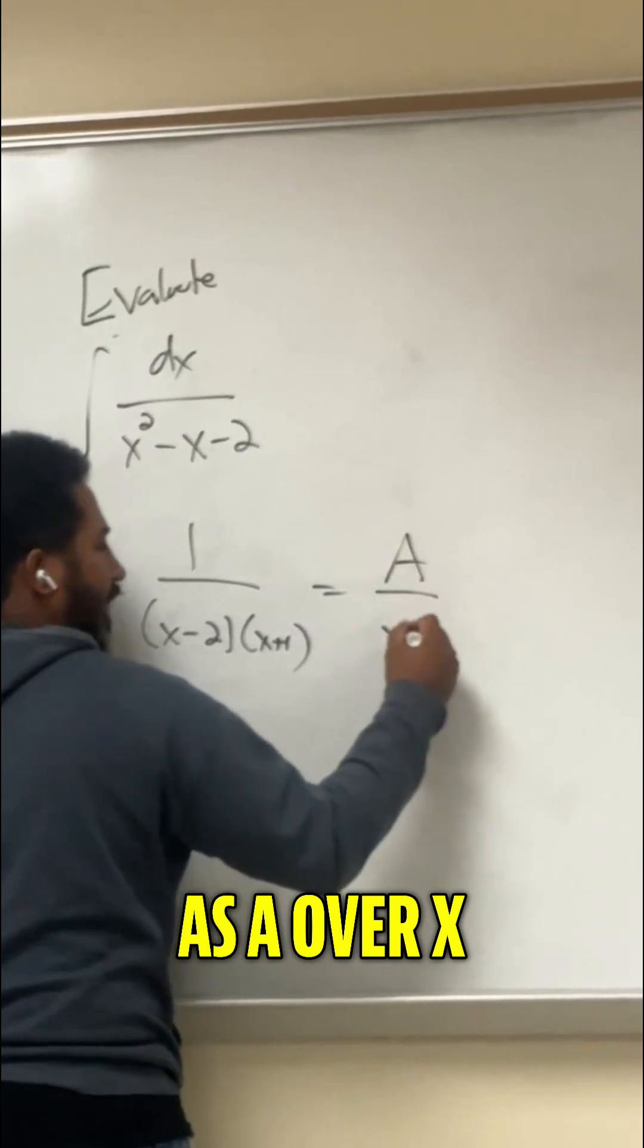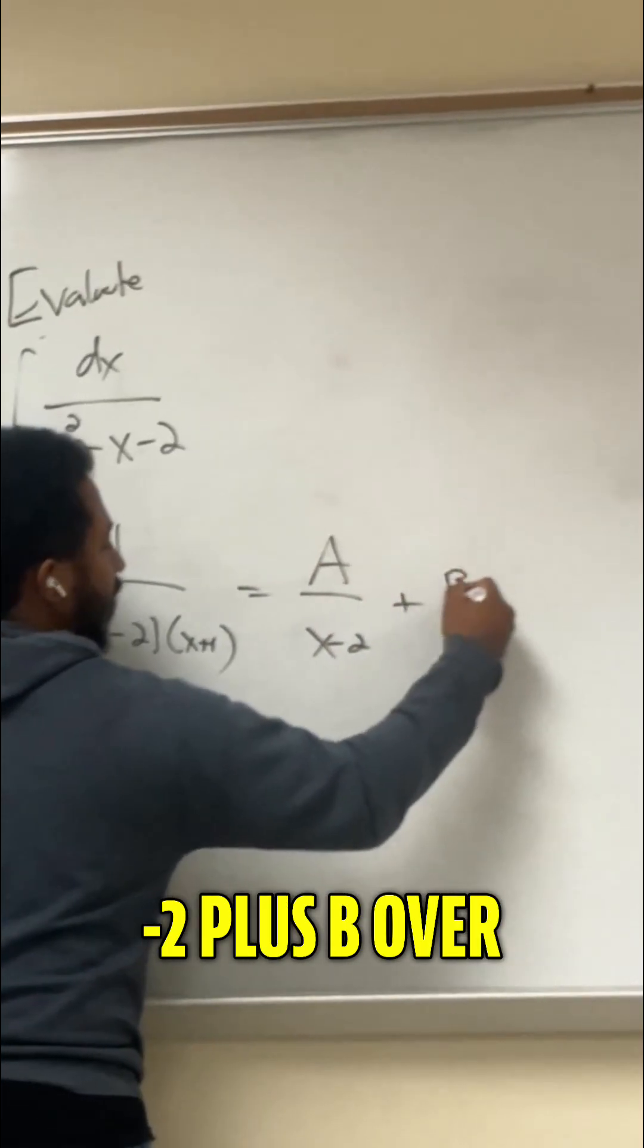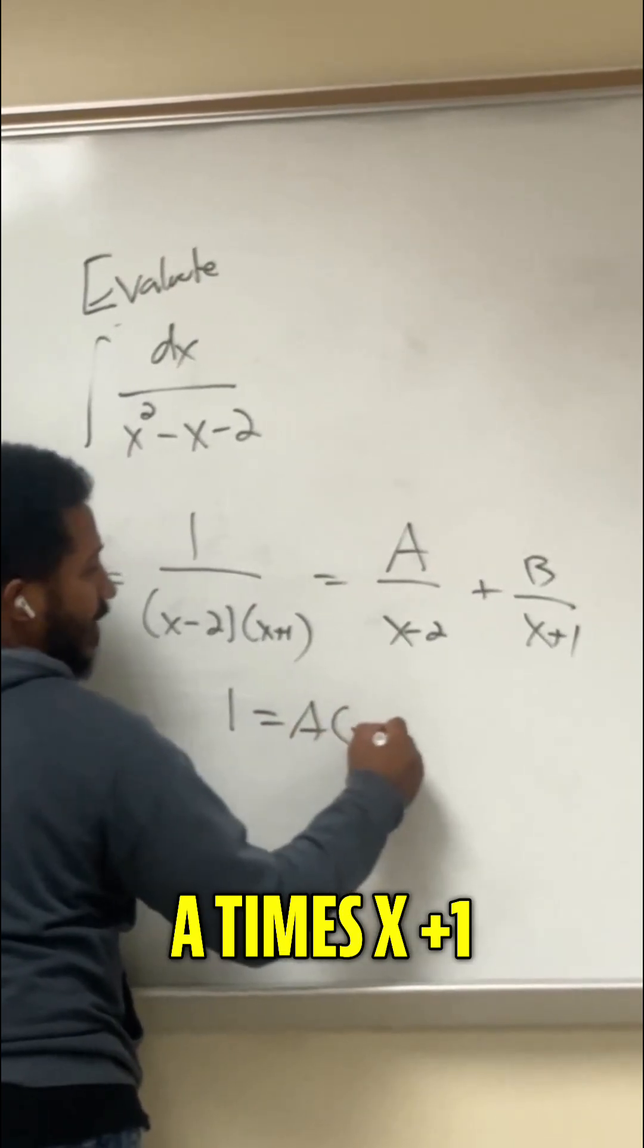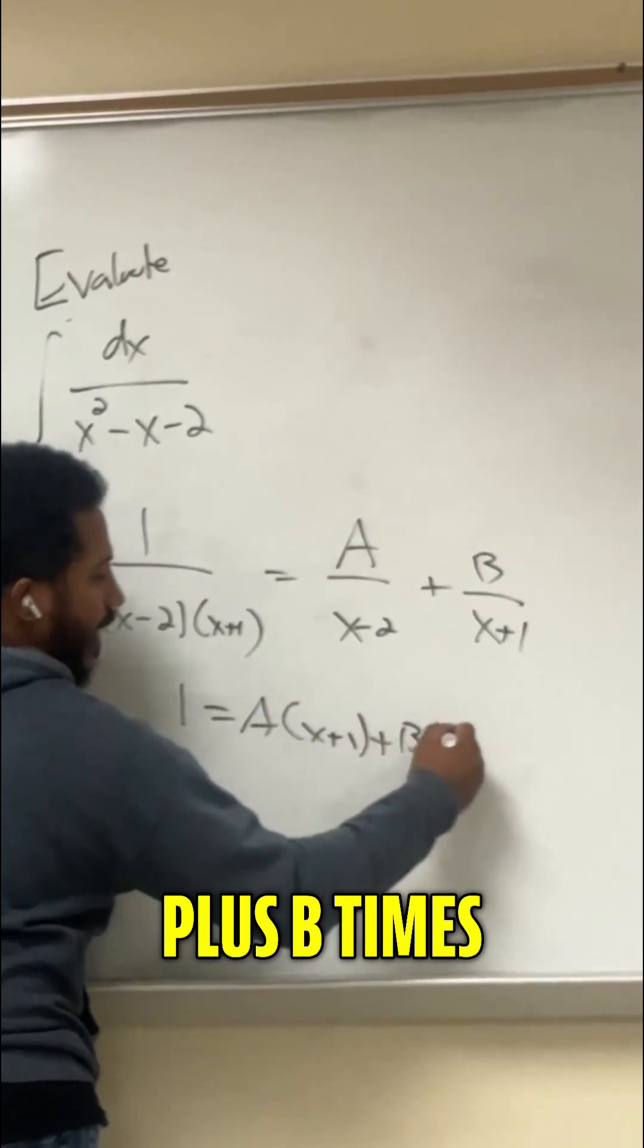So the goal is to rewrite this as a over x minus 2 plus b over x plus 1. Multiplying by the LCD, we get 1 equals a times x plus 1 plus b times x minus 2.